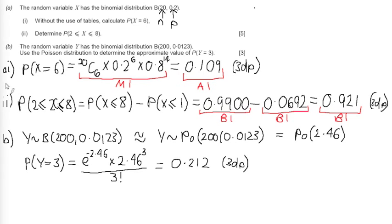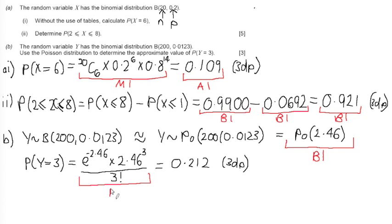Let's look at how we gain our marks on this question. First, we get a statement mark for stating the correct Poisson approximation with a mean of 2.46. We then get a method mark for showing we're using the Poisson formula with the correct substitution. Finally, we finish with an accuracy mark for our answer of 0.212. I hope that made sense and that you can understand it.